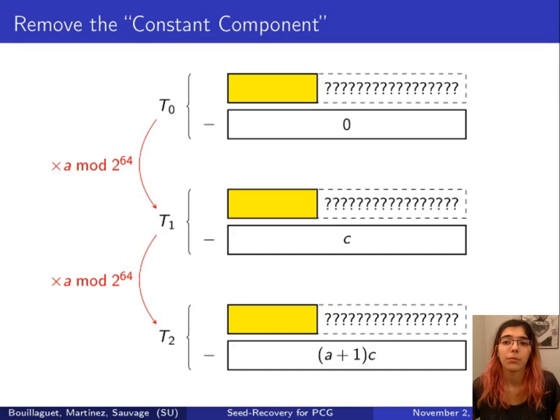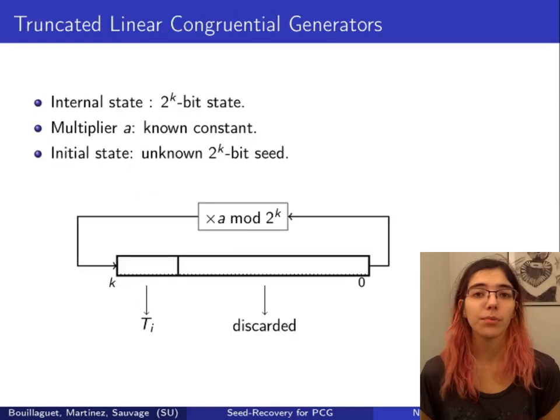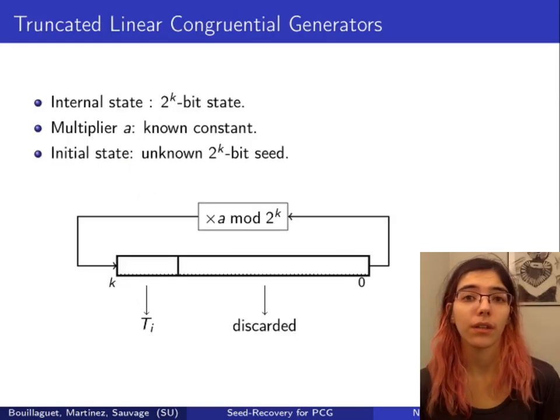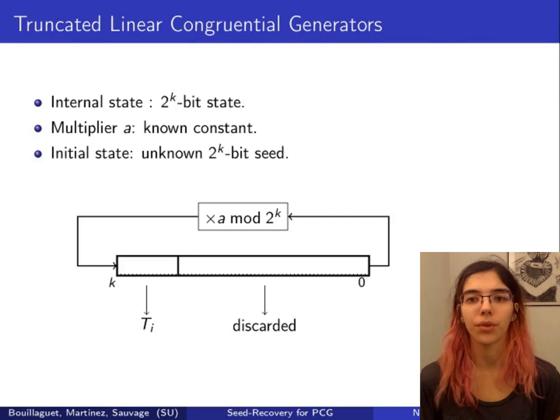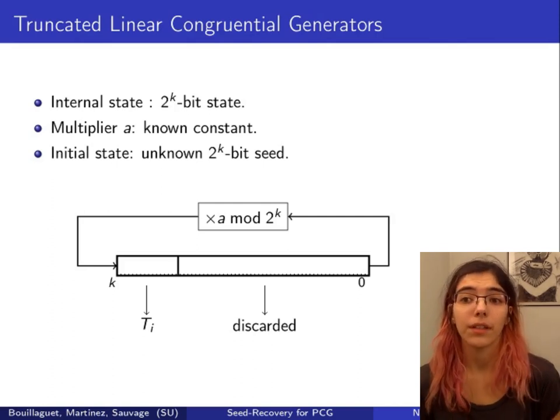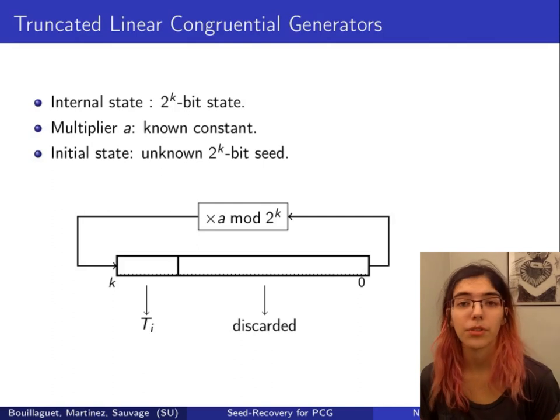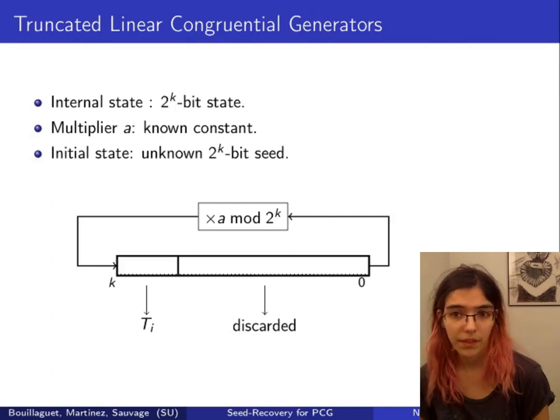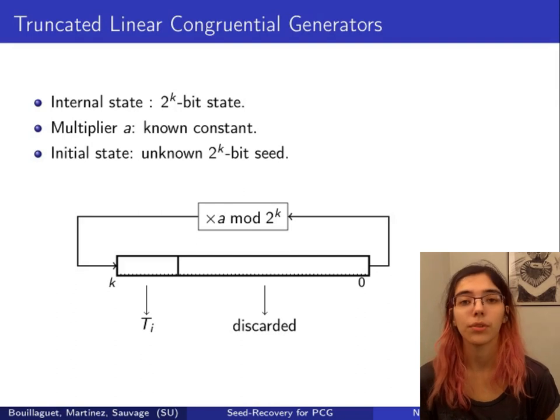The rest of the attack uses this yellow middle part to reconstruct everything. We remove from this yellow part its C component to get a truncated geometric sequence. This problem is equivalent to breaking a truncated linear congruential generator in an easy particular case.